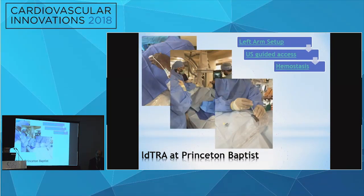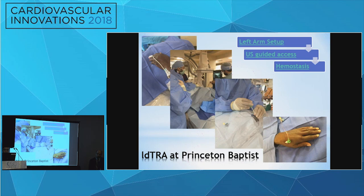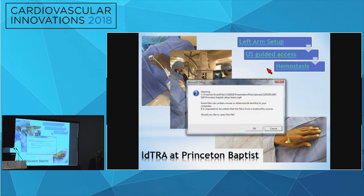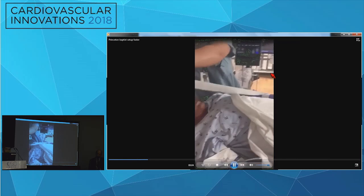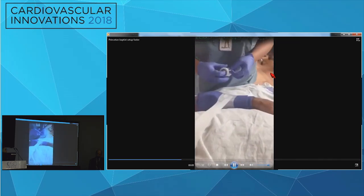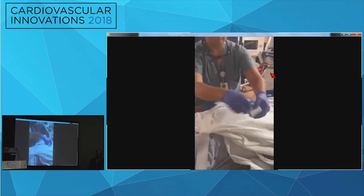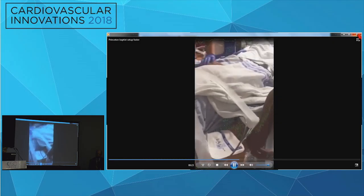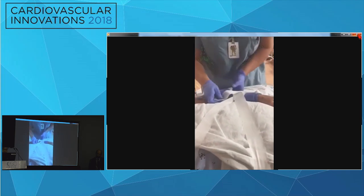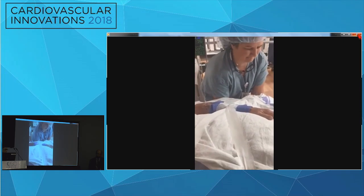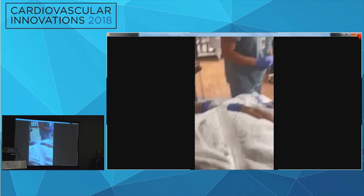The way we set up at Princeton Baptist Center — we have a few videos to share. This first video shows our way to set up the patient with the left arm supine and close to the right femoral area. This setup is very similar to right femoral access and gives strong support and stabilization of the left arm.